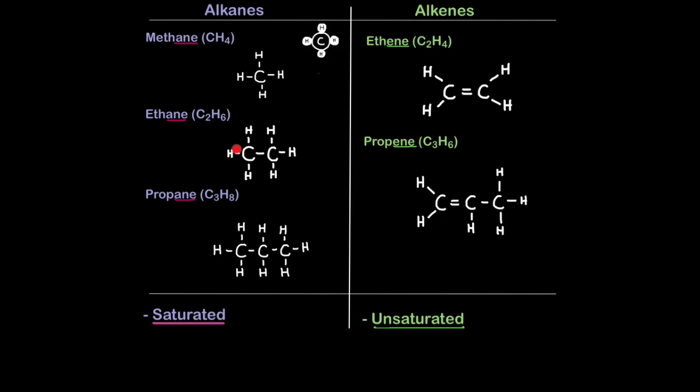You may have noticed that all the carbon atoms in alkanes share single bonds with other atoms in the molecule. Whereas with alkenes, there's always the presence of this equal sign, which is actually a double bond. Carbon has the potential to bond with four things. In alkenes, there's this spare bond which hasn't bonded to anything individually. Instead, it's latched onto another carbon. For this reason, we describe alkanes as saturated molecules.